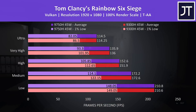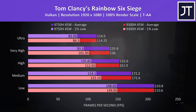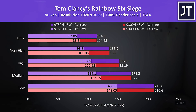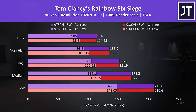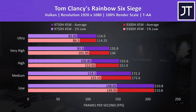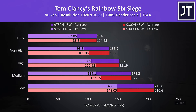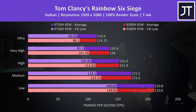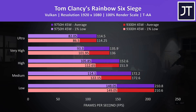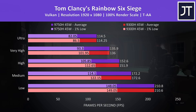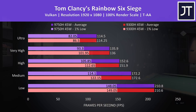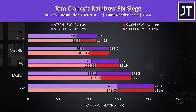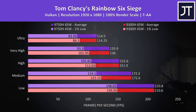Rainbow Six Siege was also tested using the game's benchmark tool with the latest Vulkan option. The average frame rates are so close here that there's not going to be a perceivable difference between the two, and interestingly the i5 was actually consistently coming out in front with the 1% low performance. The i5 does actually clock higher in multicore loads as we'll see later, so this could be part of the reason.